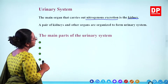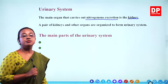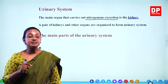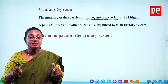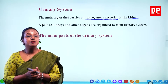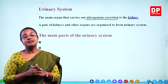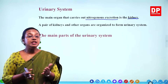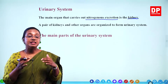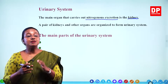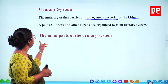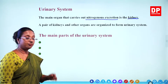A pair of kidneys and other organs are organized to form the urinary system. From the kidneys, there are ureters — tubes that bring urine produced within the kidney into the bladder. Urine is temporarily stored in the bladder and excreted through the urethra when the bladder fills and you get the urge to pass urine.